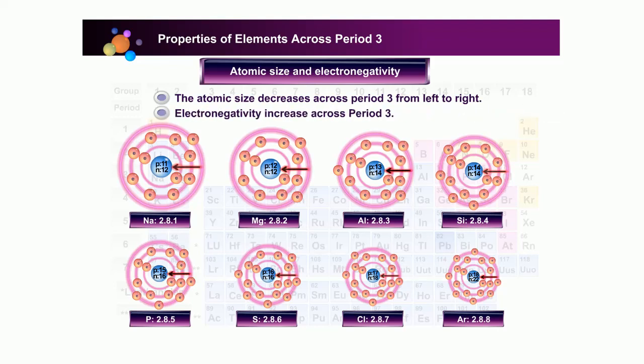The increasing nuclei attraction on the valence electrons and the decreasing atomic size will also increase the electronegativity of elements across period 3.